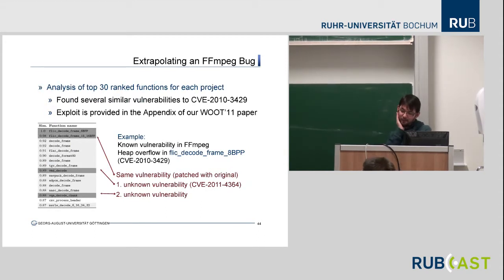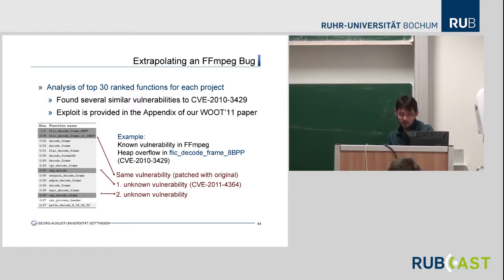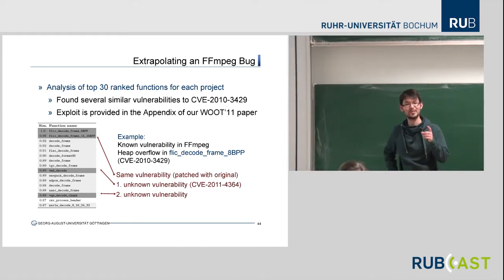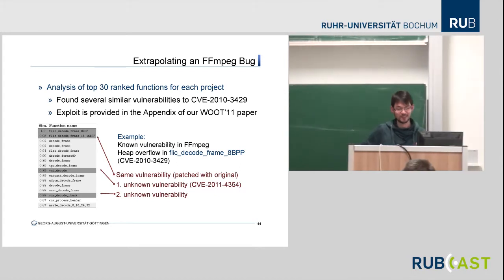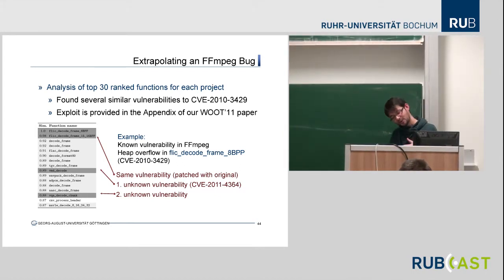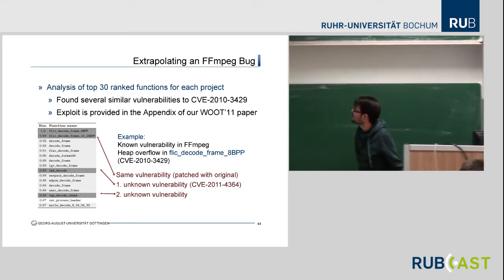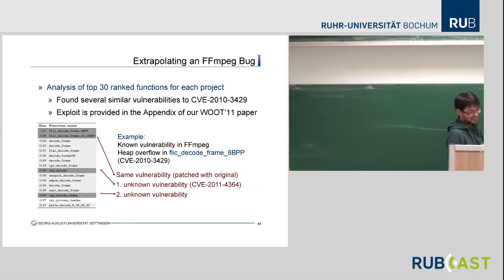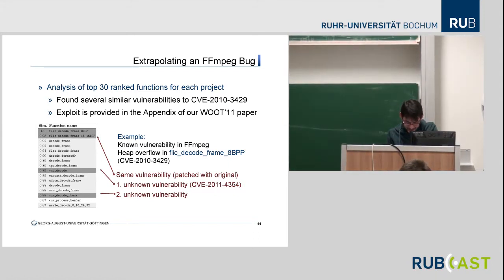We did this on FFmpeg — an image and video processing library used in many tools. Somebody reported a bug in the function flicDecodeFrame8BPP. We used our tool to find similar code, and it immediately told us there's another function: flicDecodeFrame1516BPP. That was in the same source file, so the developers had seen it and patched it too. But further down — not quite as similar, but still similar enough — the function VMDDecode contains the exact same vulnerability. And further down, VQADecodeChunk also contains that same vulnerability.